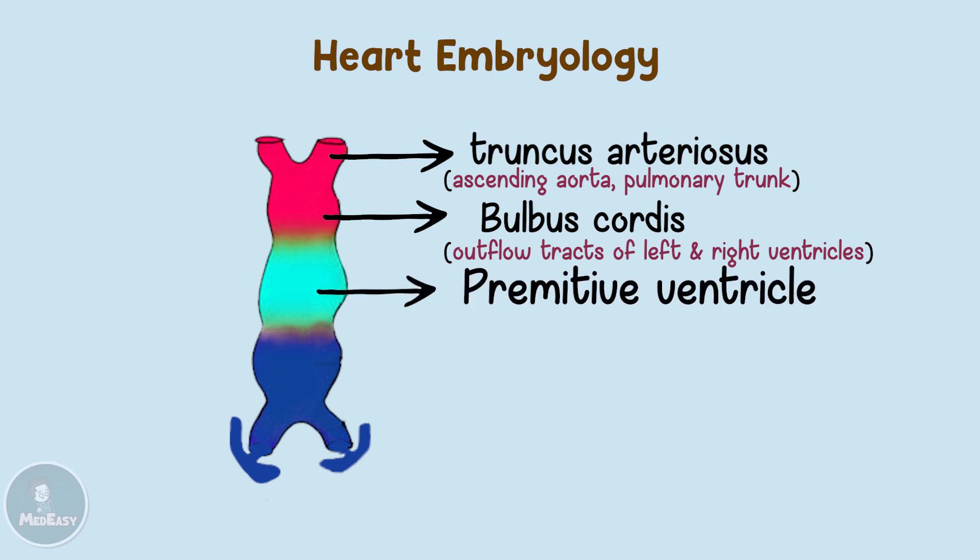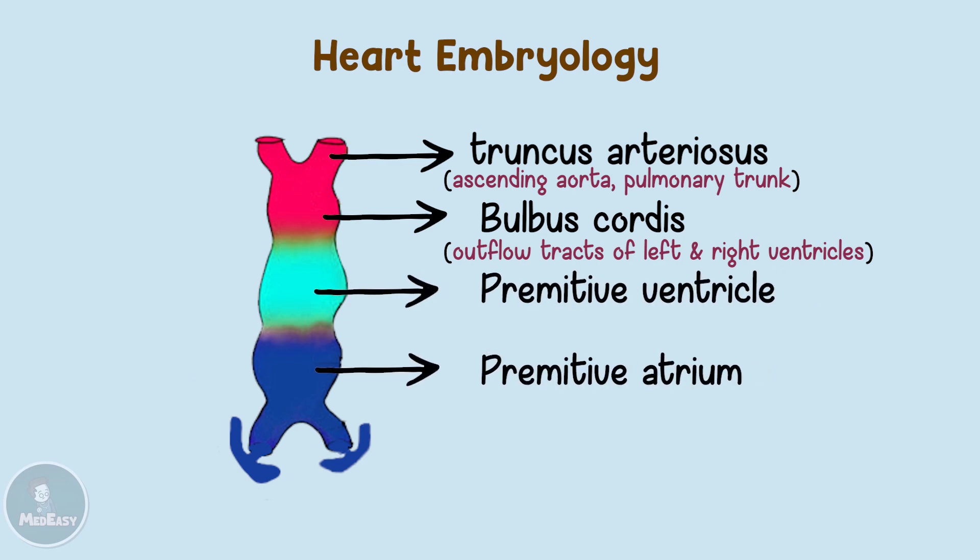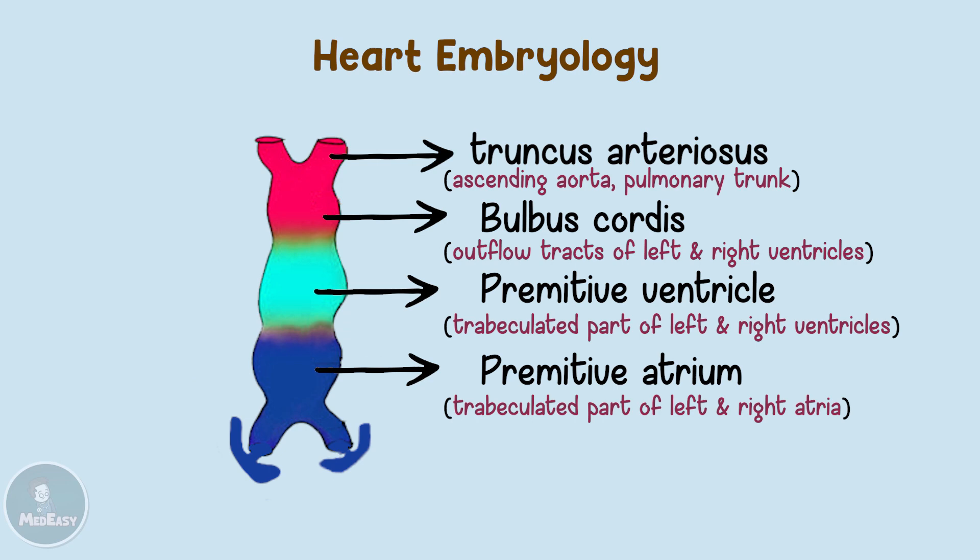Next we have the primitive ventricle and primitive atria. They are reversed in order because looping will place the upper ventricle on the lower side while placing the lower atria on the upper side. The primitive atria and ventricle give rise to the trabeculated, meaning contractile, parts of both the left and right ventricle and left and right atria respectively.